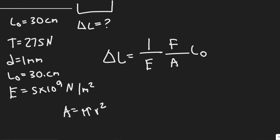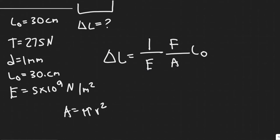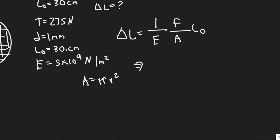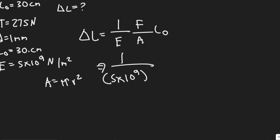So really this problem is just a matter of knowing this formula and plugging it in. So let's go ahead and do that. So we have 1 over the Young's modulus, 1 over 5 times 10 to the 9 for nylon. The force is going to be 275 Newtons dividing by the area, which is pi times R squared.